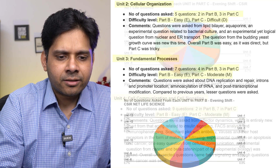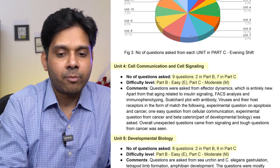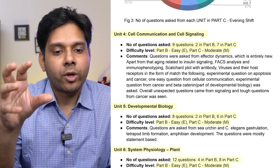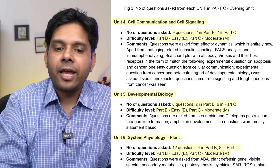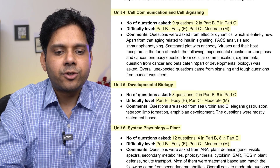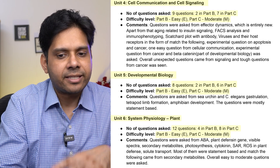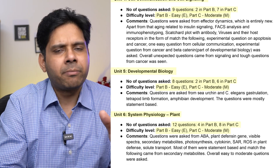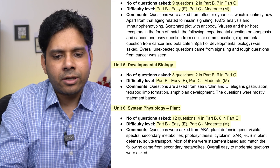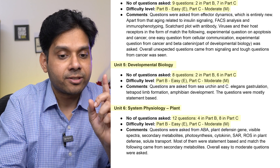Unit 4, Cell Communication and Signaling, had nine questions again — two in Part B and the majority in Part C. It is a scoring unit, so you should prepare for it. Part C was moderate and Part B was easy. Unit 5, Developmental Biology, had two questions in Part B and six in Part C — Part B easy, Part C moderate — making eight questions total. Unit 6, Systems Physiology — Plant, had 12 questions, majority in Part C, making it a scoring unit.